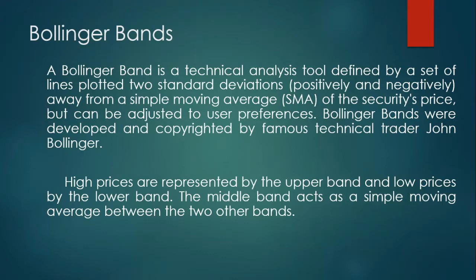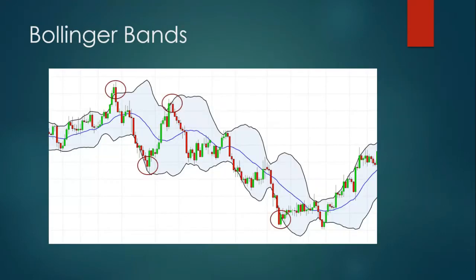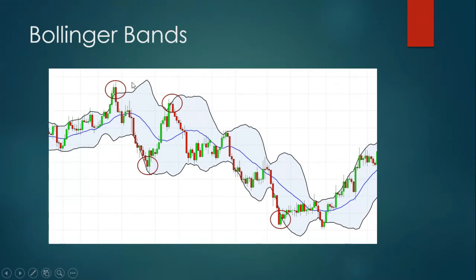So you may be thinking: what is the upper band, what is the lower band, what is the middle band? I will just explain. So this is the graph — it will look like this. This is the lower band, this is the upper band, and this is the middle band. This is also called a simple moving average — this blue line you can see here. This is the simple moving average line. This is the positive one and this is the negative band.